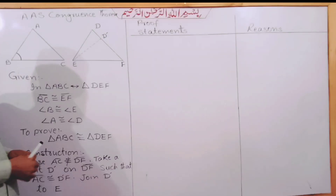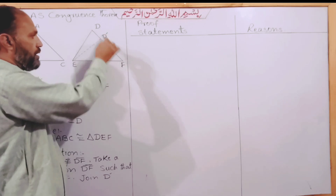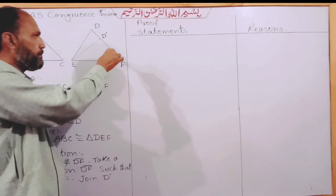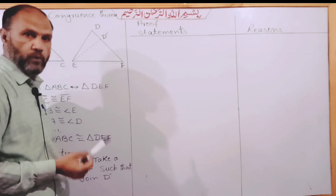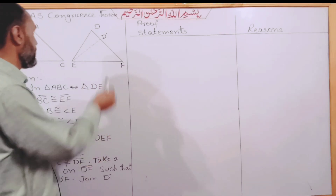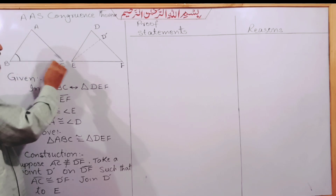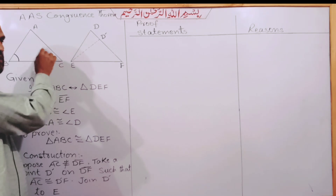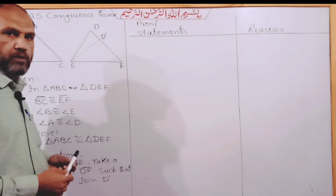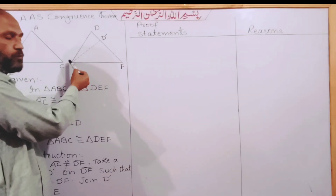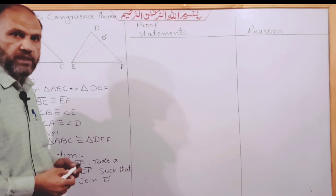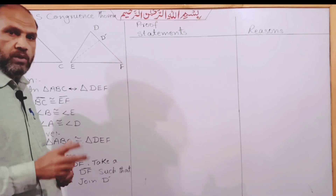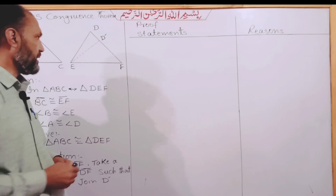For the construction, we take any point D-prime on DF such that D-prime F is congruent to AC — meaning the distance D-prime F equals the side AC. Then we draw a line joining D-prime to vertex E.